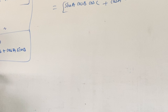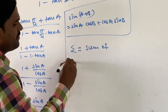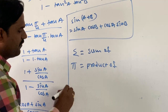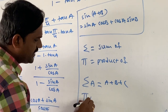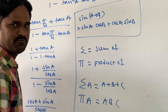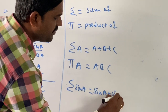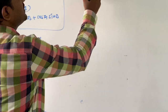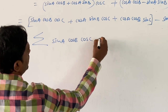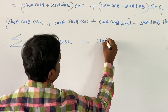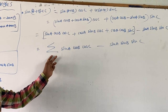Observe the expansion: sin A has the remaining two as cosines, similarly sin B with remaining two cosines, and sin C with remaining two cosines. These three terms can be written in summation notation as Σ(sin A cos B cos C). The last term is the product sin A·sin B·sin C. So sin(A+B+C) = Σ(sin A cos B cos C) − sin A sin B sin C. Here, Σ means sum of and Π means product of.